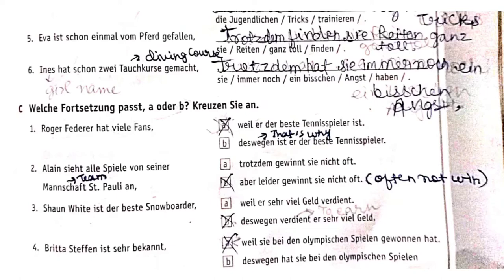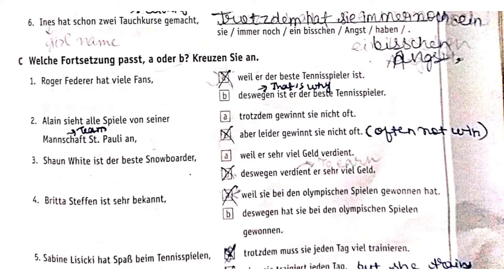The course was done — trotz ihm, haazi — who is the best tennis player. Next, Align checked the stats of all the members of their team, Saint Pauli, but despite all that, they were not able to win.